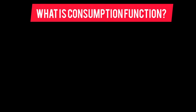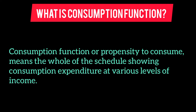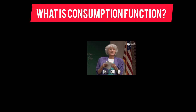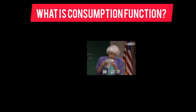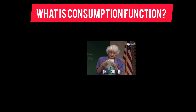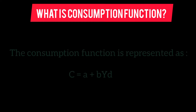First, what is consumption function? Consumption function, or propensity to consume, means the whole schedule showing consumption expenditure at various levels of income. It indicates a functional relationship between aggregates — for example, total consumption expenditure and the gross national income. It is a schedule that expresses the relationship between consumption and disposable income.